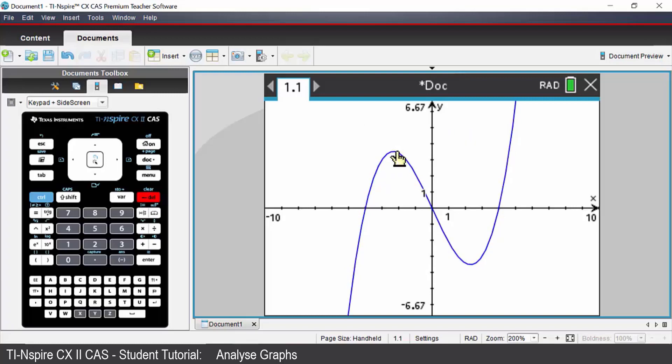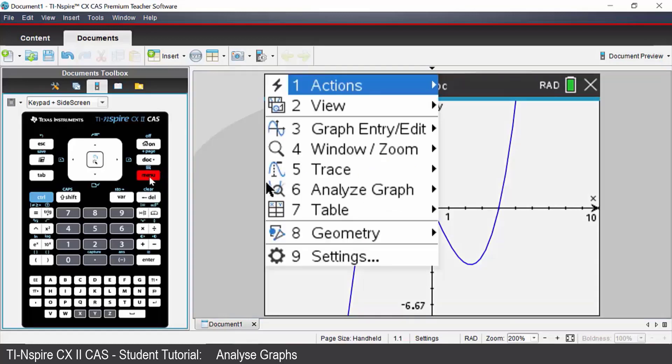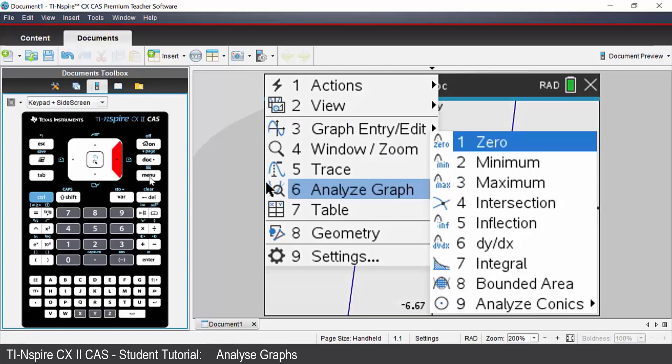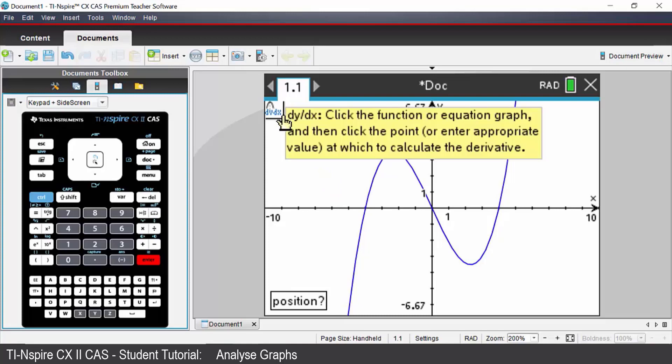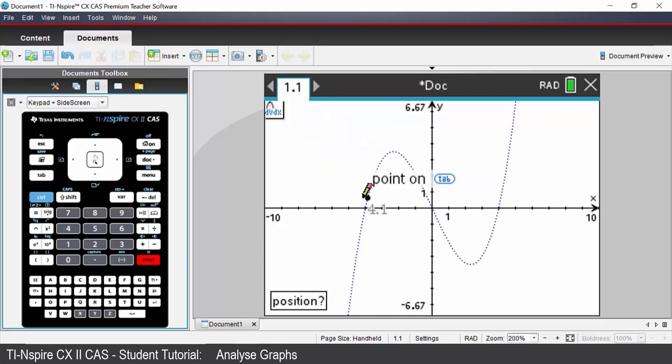The next thing we will do is find the derivative at a particular point on this cubic. To do that, click the menu key again, come down to Analyze Graph option 6, and we're going to choose option 6, dy on dx or derivative. What you would do is you've got a choice. If you hover over that little icon in the top left, it tells you possible options that you can do. I'm going to find the derivative of the function at the x value of negative 4 there.